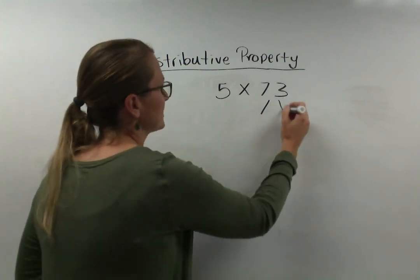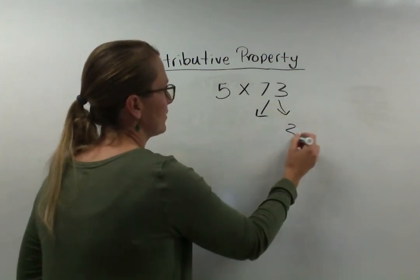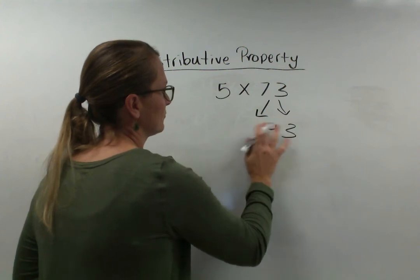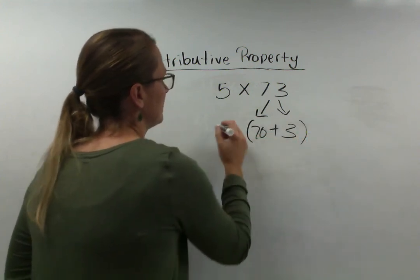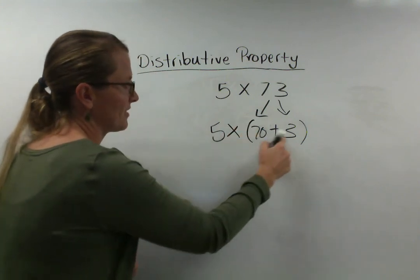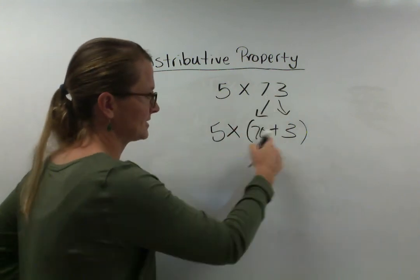So break 73 apart into three 1s and 7 tens. 7 tens equals 70. We learned that yesterday. And then we're going to multiply 5 times (70 plus 3). Because that's the same thing as 73.